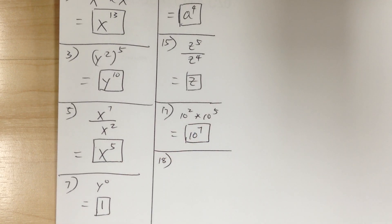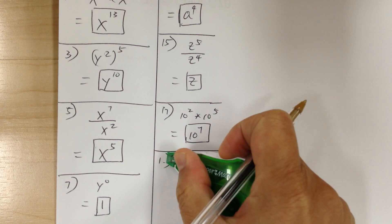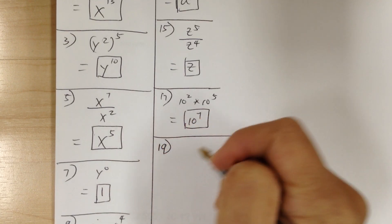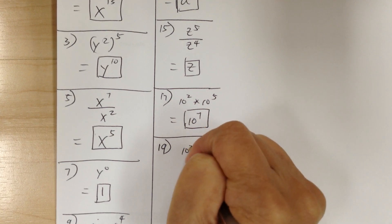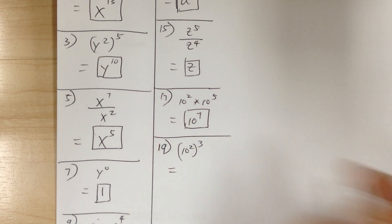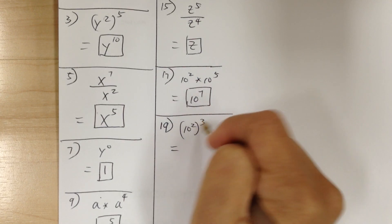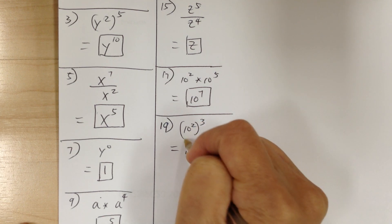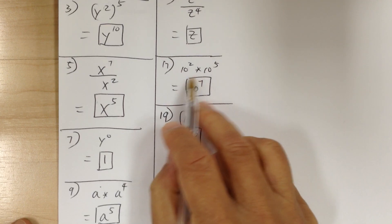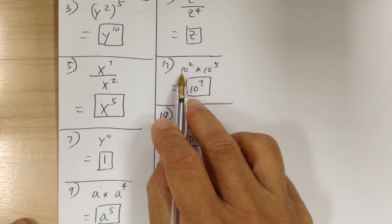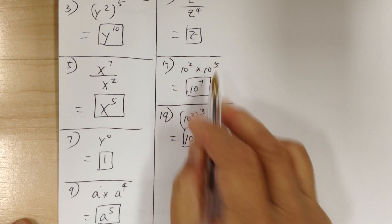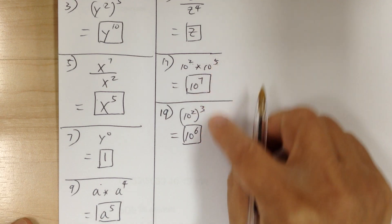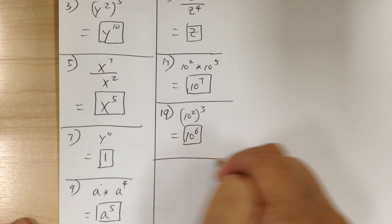Number 19, you got 10 to the 2 to the 3 power. You use the power rule, so you multiply — so 10 to the 6. Remember: with the product rule you add; when you have exponent raised to an exponent, you multiply. Make sure you distinguish between the two types.